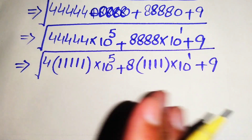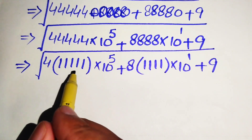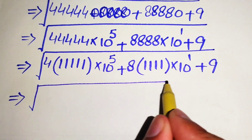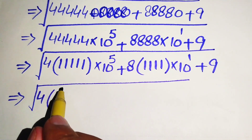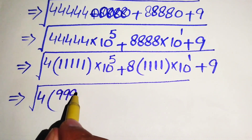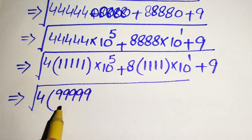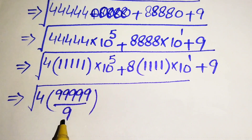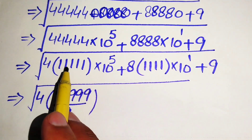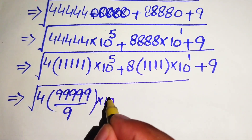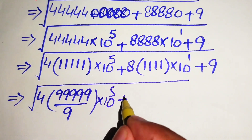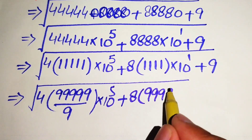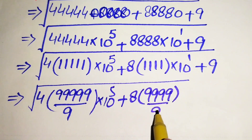Now you see that these are 5 times of 1. We write it as the square root of 4 into — if we write this as 9, 9, 9, 9, 9 (5 times of 9) divided by 9. Because we know that when 5 times of 9 is divided by 9, then we get 5 times of 1. This is multiplied by 10 raised to power 5, plus here we have 4 times of 1 written as 9, 9, 9 divided by 9.